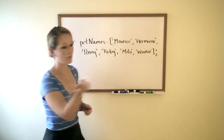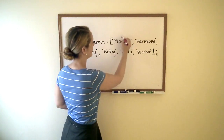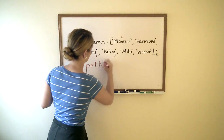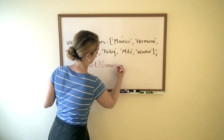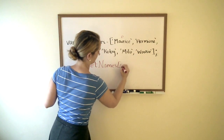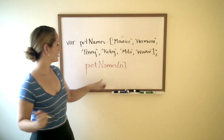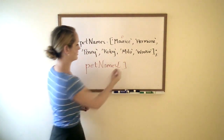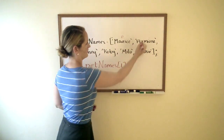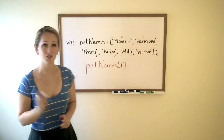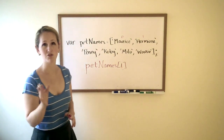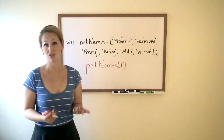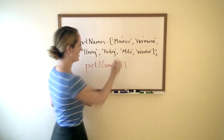It starts at zero. So if we said pet names zero like this, that would return Maurice. If we try to do pet names one, that would return Hermione. So it's really important that you just remember to start counting at zero, or else the information you get back isn't going to be what you expect.